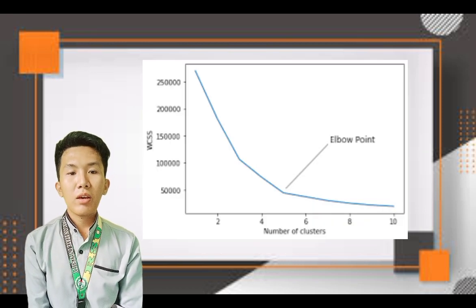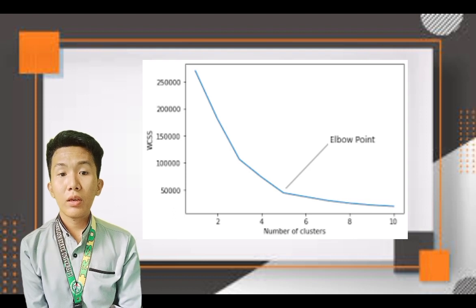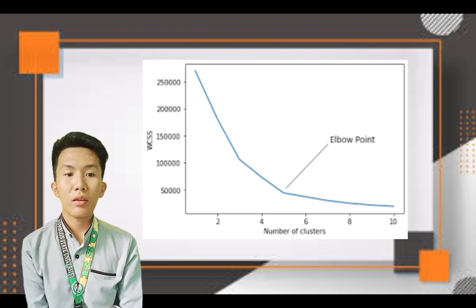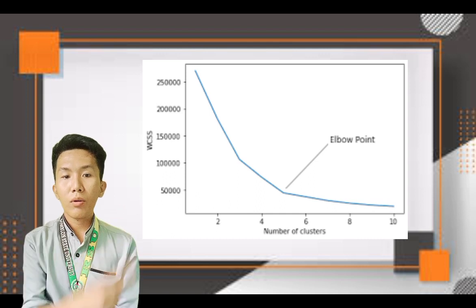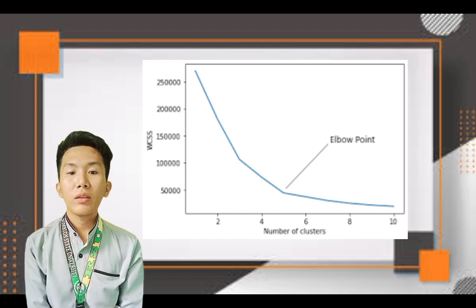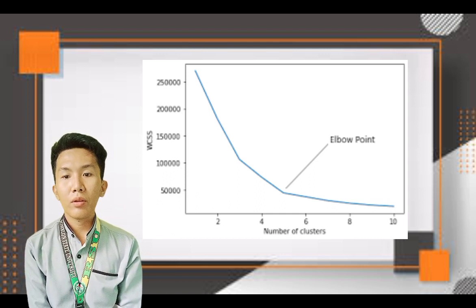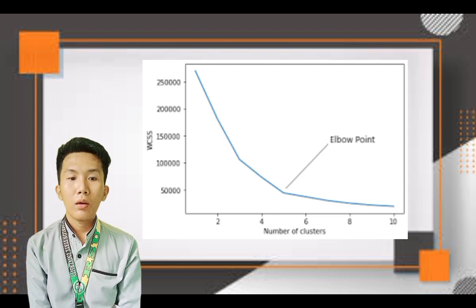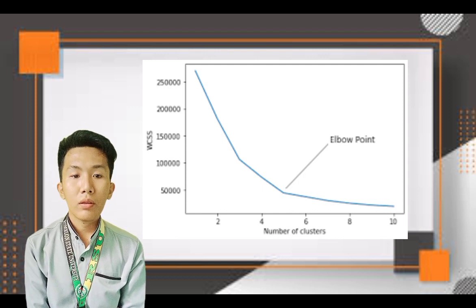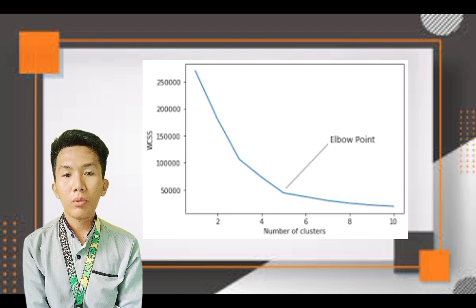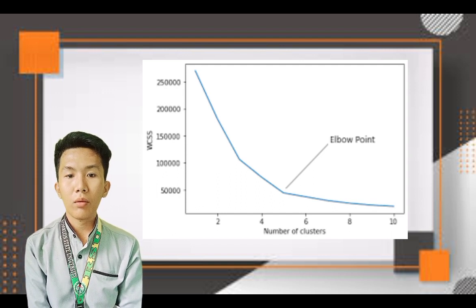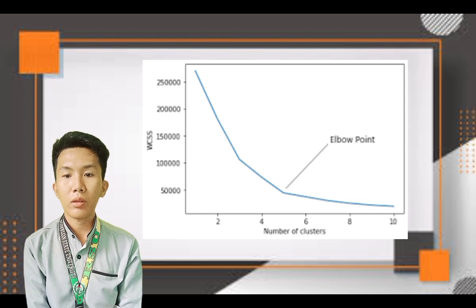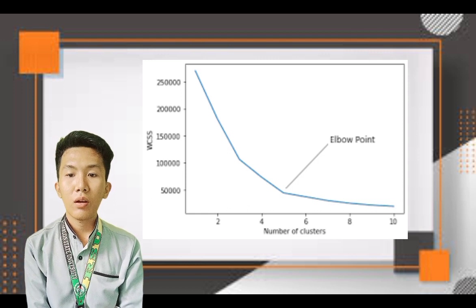The best value for K is selected. For example, the elbow or knee method is used to determine the best K. We try the K-means implementation for multiple K values and plot them against the sum of squared distances from the center, which is the loss function.